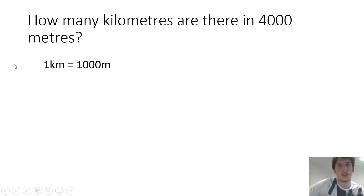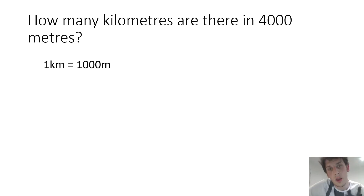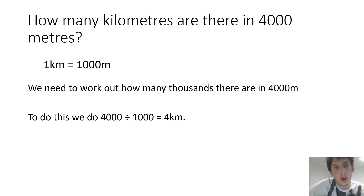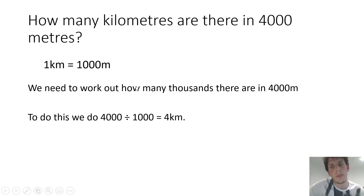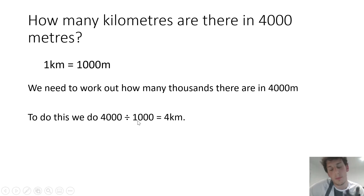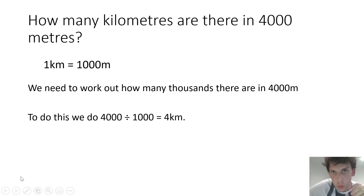We have 4,000 meters. One kilometer equals 1,000 meters, which means to work out how many kilometers there are in 4,000 meters, we need to know how many thousands there are in 4,000 meters. We do 4,000 divided by 1,000, which equals 4. So in 4,000 meters, there are 4 kilometers. Well done. We're now going to move on to our task for today.